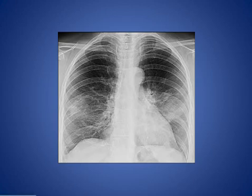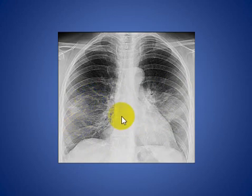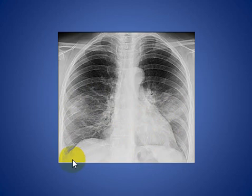Here we have a chest X-ray of a patient with cryptogenic organizing pneumonia. We can see patchy areas of consolidation and ground-glass opacity involving both lungs, more to the left side. The patient is a female, as indicated by the breast shadow, and the findings are consistent with cryptogenic organizing pneumonia.